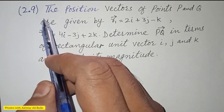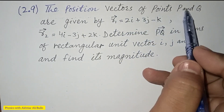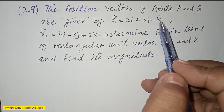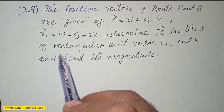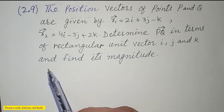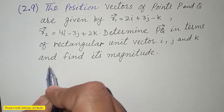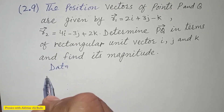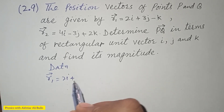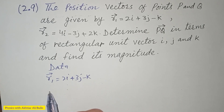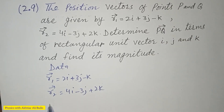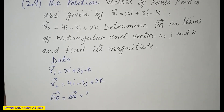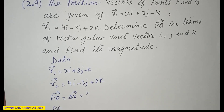Question 2.9: The position vectors of points P and Q are given by r1 = 2i + 3j - k and r2 = 4i - 3j + 2k. Determine vector PQ in terms of rectangular unit vectors i, j, and k, and find its magnitude. First, we form the data: r1 = 2i + 3j - k and r2 = 4i - 3j + 2k. We need to find vector PQ, which equals delta r, and its magnitude.